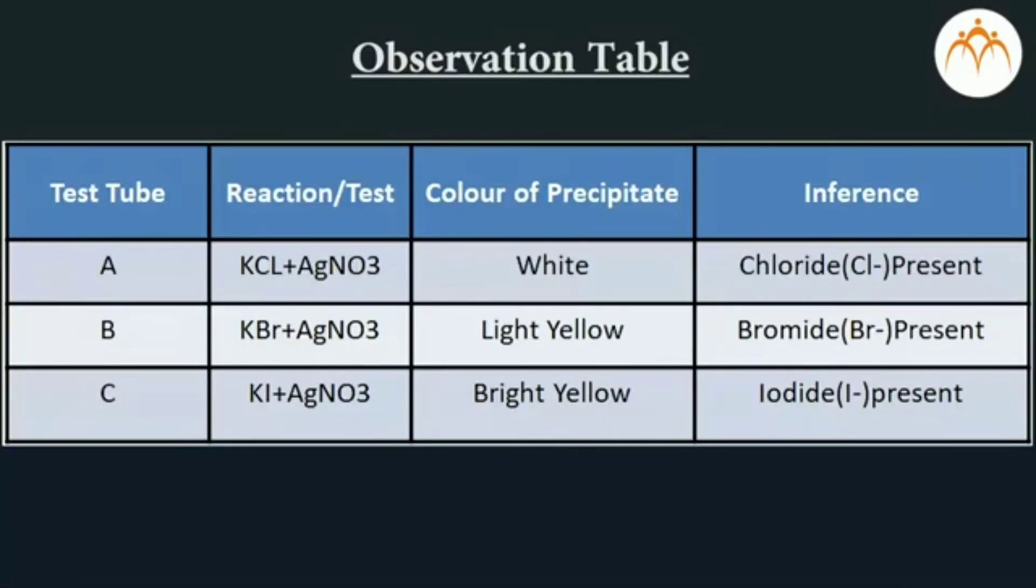This is the observation table. We conclude the following. We have identified that all three solutions contain halide or compound formed by halogens which is the 17th group. There is precipitation. Precipitates are of different colors. Colors give us information if it is chloride, bromide, or iodide. This process is a preliminary example of qualitative analysis.